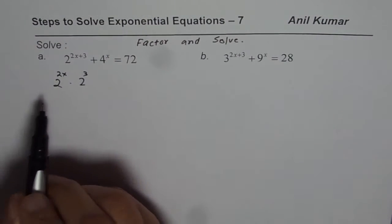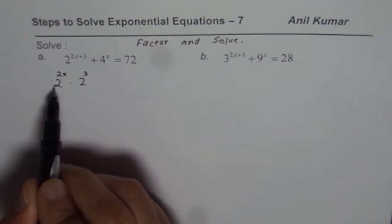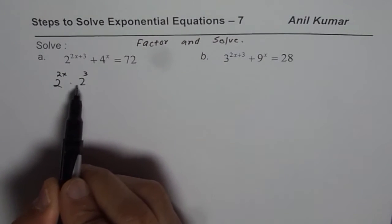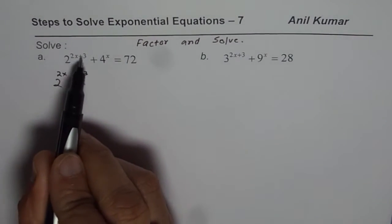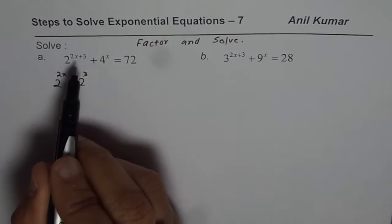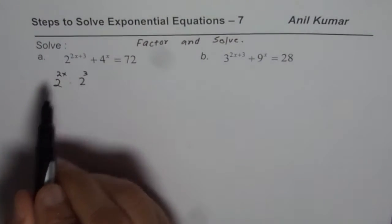I hope you understand this. When you multiply with the same base, two numbers' exponents get added up and you get 2x plus 3. So that is how you should actually write this number.